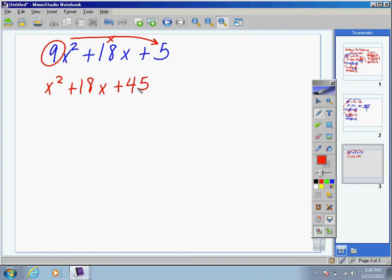Now that we have a trinomial with a coefficient of 1 out in front, we can use our factor sum method. Take some time and think of the factors of 45 that add to 18. Hopefully, you came up with the factors of 3 and 15. Now write your resulting binomials that factor x squared plus 18x plus 45: x plus 3 and x plus 15.